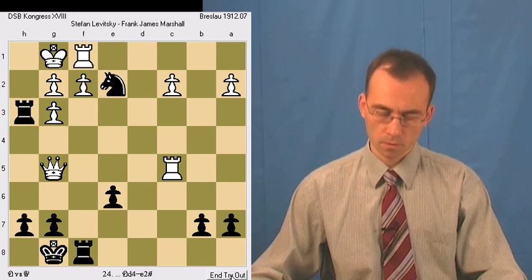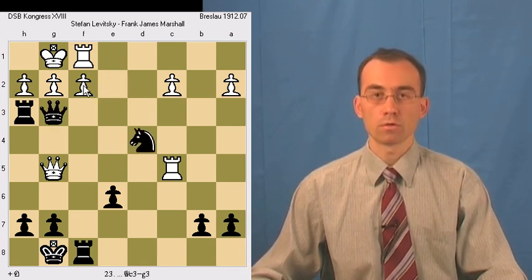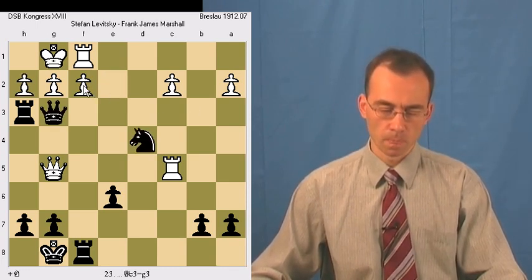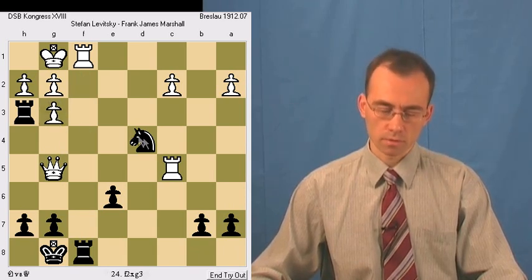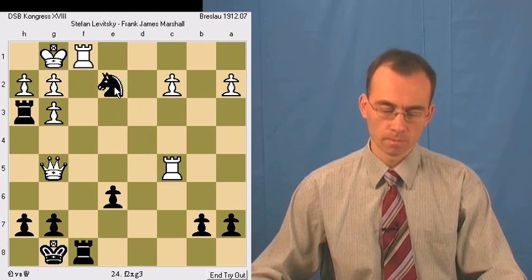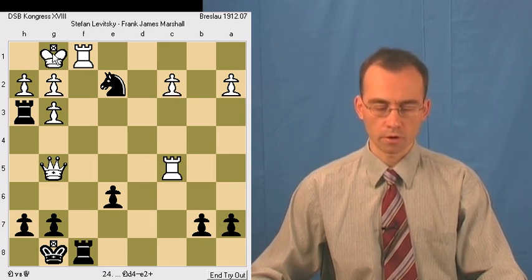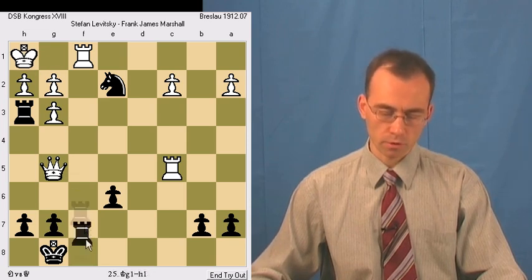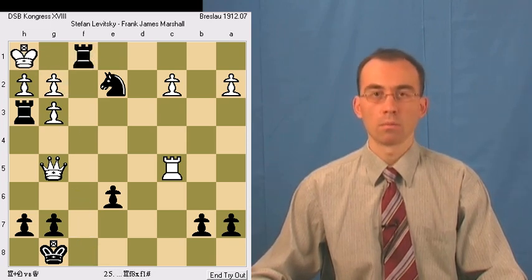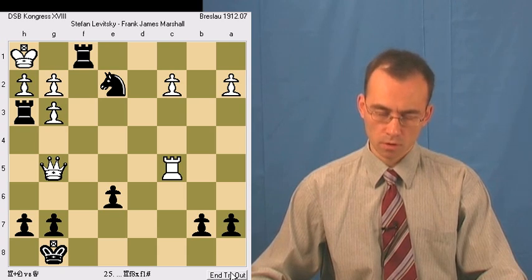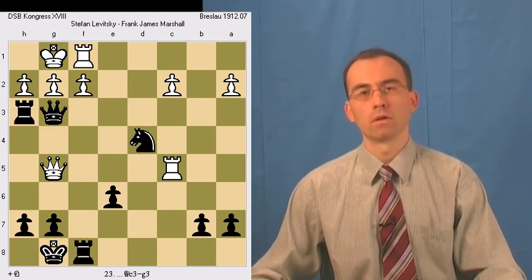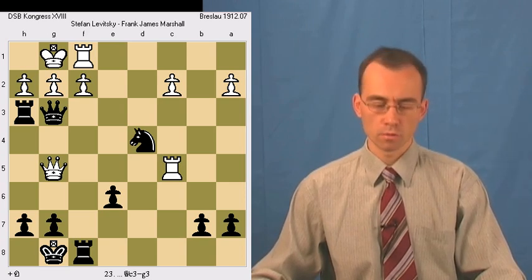So the other possibility is to take with the other pawn, f pawn takes queen. Then the same move knight e2 check, and the only legal move white has is king h1, and then rook takes rook mate. So this possibility also leads to mate.